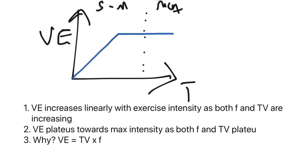The final graph covers minute ventilation. Minute ventilation increases linearly with exercise intensity because both breathing frequency and tidal volume are also increasing. It plateaus towards maximal intensity exercise because both frequency and tidal volume also plateau — since minute ventilation equals tidal volume multiplied by breathing frequency.